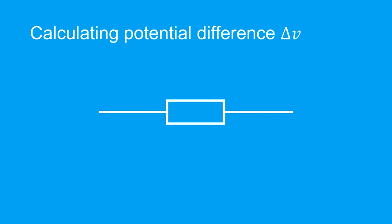Now we can talk about how to calculate potential difference. Let's say we have a resistor and we know that a current flows in this direction.